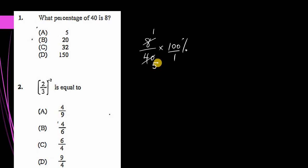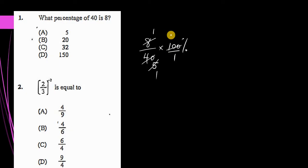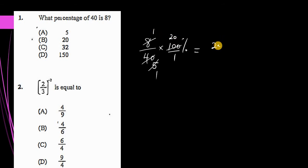Here we have 5 in the denominator and 100 in the numerator, so we can simplify. Can 5 enter 100? Definitely. So, 5 goes into itself once, and 5 goes into 100 twenty times. We cannot simplify the numerator with the denominator anymore, so we're going to multiply straight across. 1 times 20 is 20.